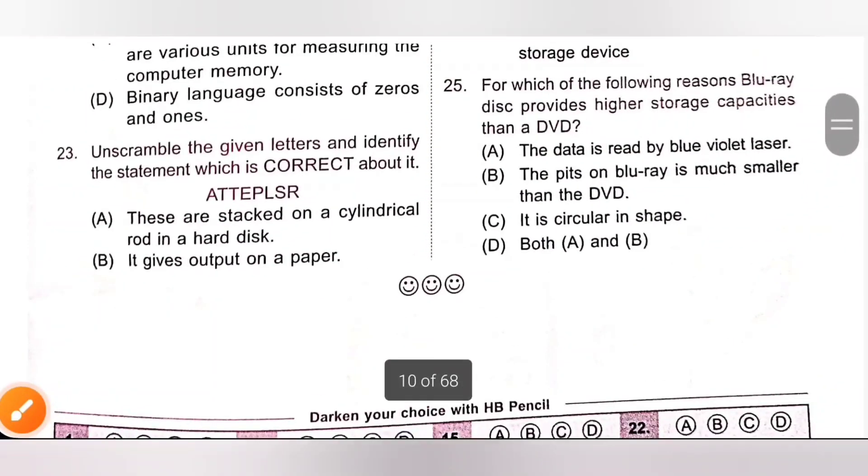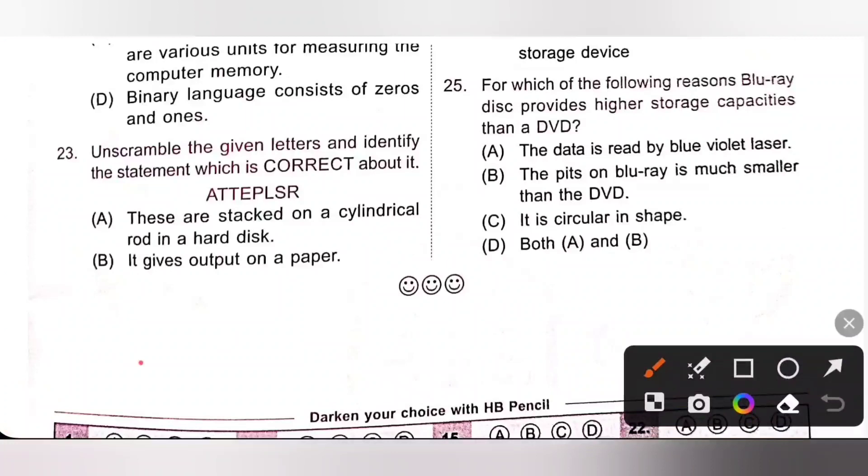Next, unscramble the given letters and identify the statement which is correct about it. On unscrambling, we get platters. A hard disk looks like a stack of platters connected by a rod going through the center. So option A, these are stacked on a cylindrical rod in a hard disk. Yes, it is true.